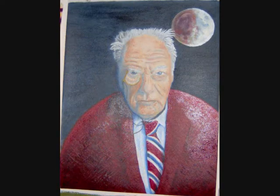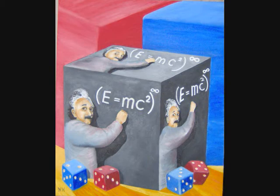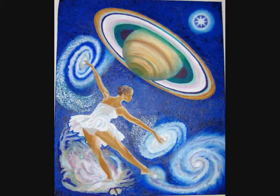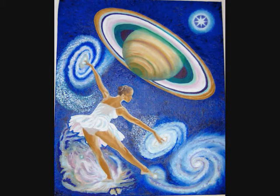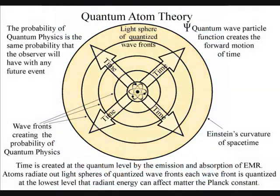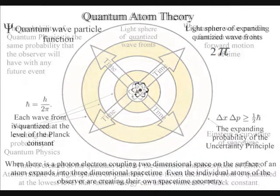Newton believed time existed as a thing in itself, and Einstein believed that something was missing from quantum mechanics. In Quantum Atom Theory, the individual atoms are creating their own time by the emission and absorption of electromagnetic radiation.